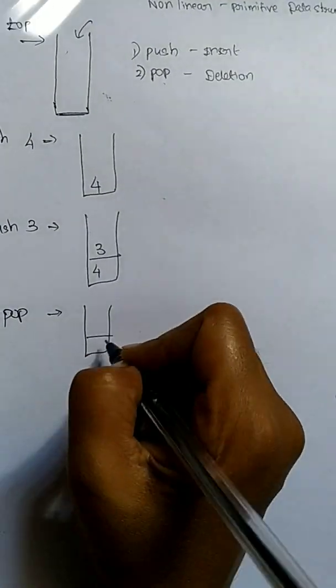Another application is reversing a string. Normally you use an array to reverse a string — reading elements one by one into positions a[0], a[1], a[2], a[3], a[4], pushing characters k, o, n, g, u into the array, then popping them out one by one to get the reversed output. So for reversing a string, you can also use a stack. The last application is parenthesis checking — whether the number of open parentheses equals the number of closed parentheses is also checked using a stack.